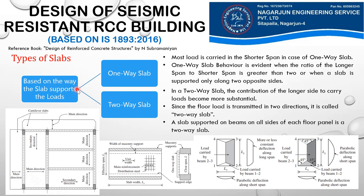On the basis of load-supporting behavior, we have one-way slab and two-way slab. In a one-way slab, most load is carried in the shorter span. One-way slab behavior is evident when the ratio of the longer span to the shorter span is greater than two, or when a slab is simply supported only along two opposite faces.